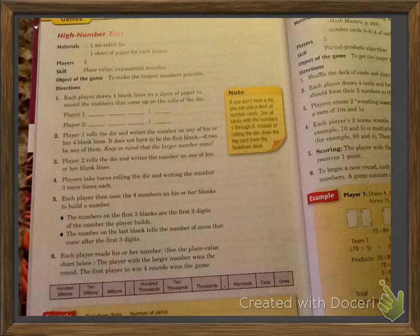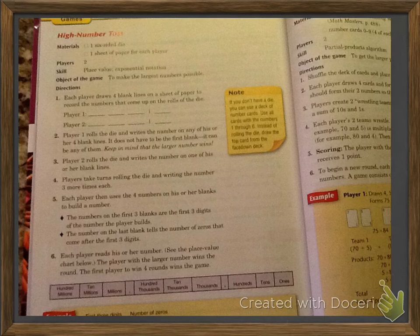So number three, the player two will roll the die, and they will write their number on a line, and you'll go back and forth until you each have your four-digit number. So if we look at step number five, each player then uses the four numbers on his or her blanks to build a number.